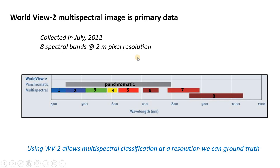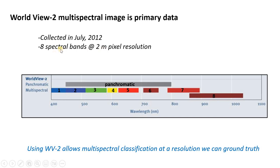We have two main datasets we're going to be using for this classification lab. One is a WorldView II multispectral image collected in July of 2012. It has eight spectral bands at two meter pixel resolution. You can see those bands here, one through eight, and it also has a panchromatic band that we won't be using. This was purchased back in 2012 for a tidy sum of money because it's fairly rare to have very good spatial resolution — two meter pixels — combined with eight multispectral bands.